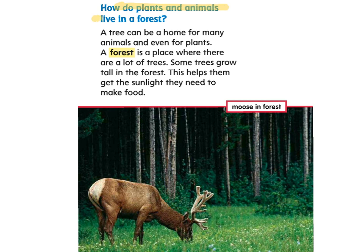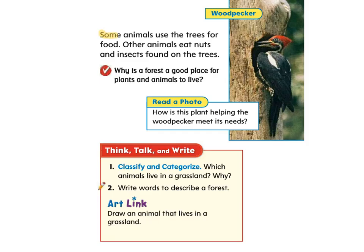How do plants and animals live in a forest? A tree can be a home for many animals and even for plants. A forest is a place where there are a lot of trees. Some trees grow tall in the forest — this helps them get the sunlight they need to make food. Here's a picture of a moose in the forest. You can see there's lots of trees and some grasses for him, so everything this moose needs to survive is right there. Some animals use trees for food; others eat nuts and insects found on the trees.